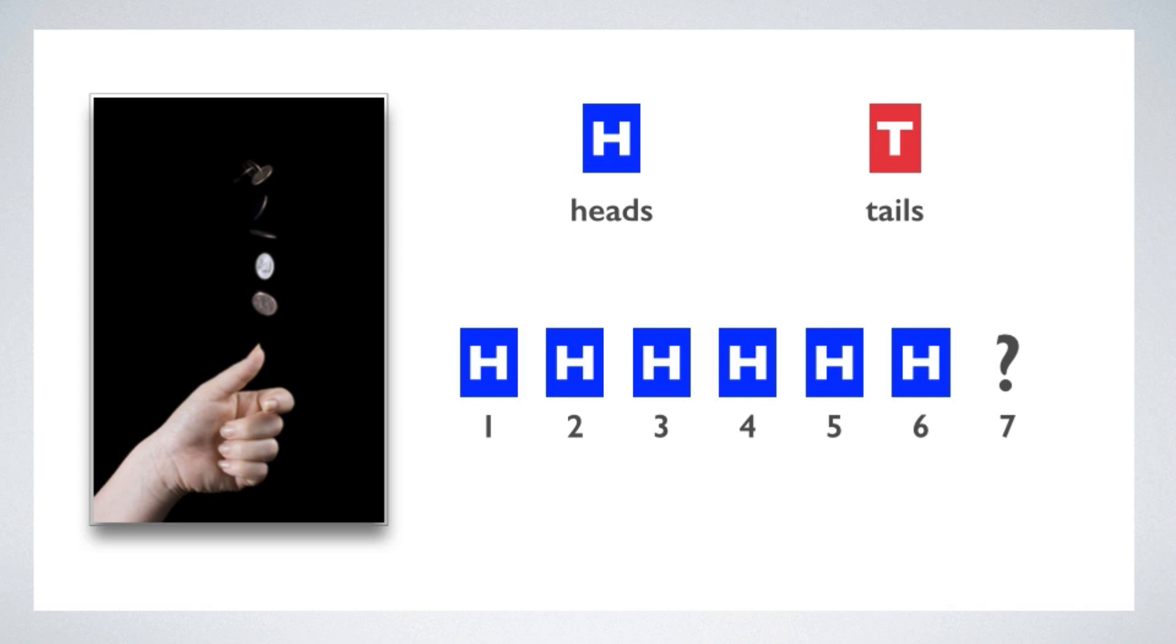Now most people, when you ask them this question out of the blue, without any tutoring on probability theory, will say that this string of heads is becoming increasingly unlikely, and that a tail is overdue. So on the next toss, it's more likely that the coin will land tails than heads. There's something very natural about this line of reasoning. The coin is unbiased, so you know that in the long run the ratio of heads to tails should even out.